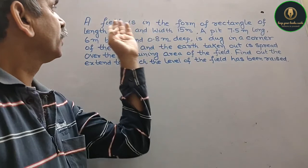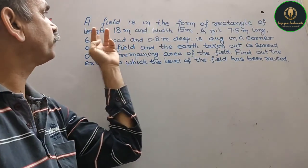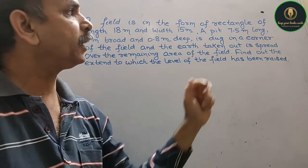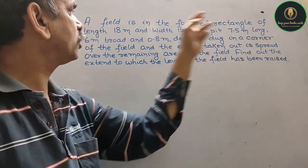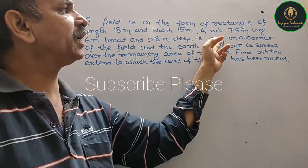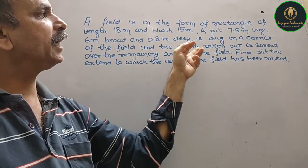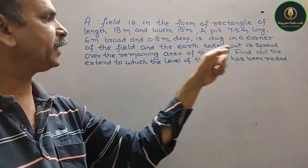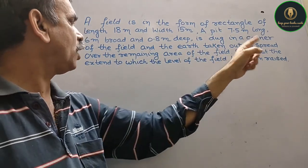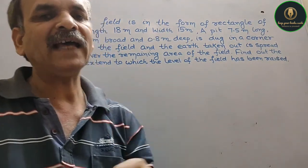The question: a field is in the form of a rectangle of length 18 meters and width 15 meters. A pit 7.5 meters long, 6 meters broad, and 0.8 meters deep is dug in a corner of the field, and the earth taken out is spread over the remaining area of the field. Find the extent to which the level of the field has been raised.